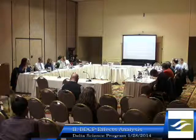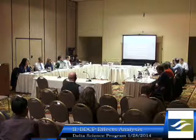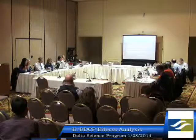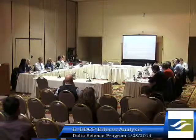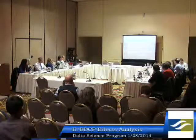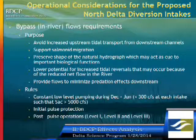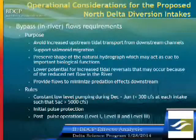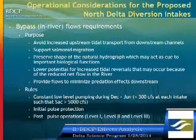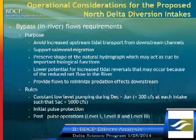One of the major uncertainties is how do we operate the project. Right now, conservation measure one includes what we call the bypass flow requirements for the North Delta intake diversions. These bypass flows were envisioned for several reasons: primarily to make sure that there's no increased upstream tidal transport because of the diversion in the channels that are downstream, and also to support the salmon migration and try to preserve the natural hydrograph, which generally is a cue to a lot of the important biological functions. The bypass flow magnitudes were selected such that the potential for increased reverse flows in the Sacramento River is minimized.